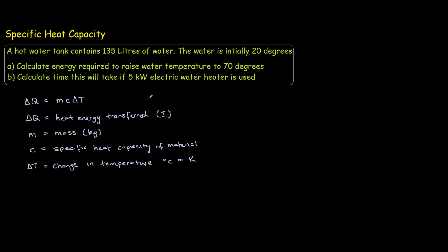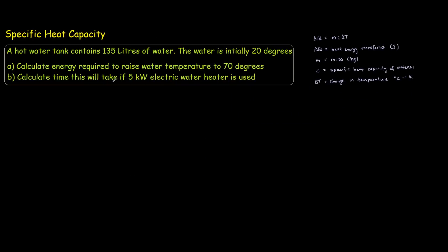Okay so first off we start off with writing our knowns and unknowns. We know that the volume of water is 135 litres, so if we want to convert this into mass this is convenient because 135 litres is just 135 kilos because 1 litre equals 1 kilo.